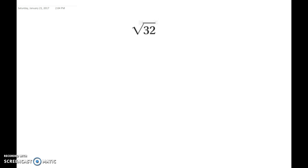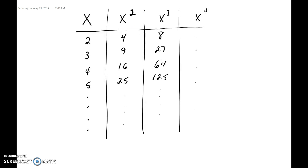We're asked to simplify the square root of 32. If you type this into your calculator it will give you a decimal value, so we can't take this as a perfect square. To simplify, we want to take as much out of the radical as we can. Since this is the square root and our index is 2, we will only look at the x squared numbers in our chart.